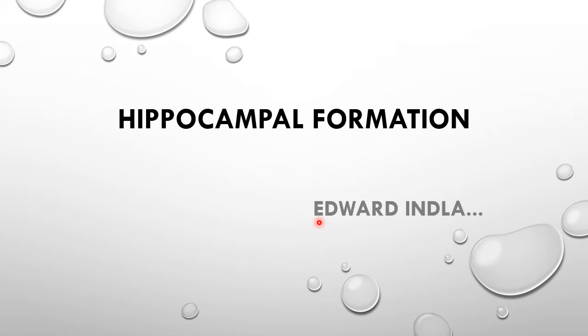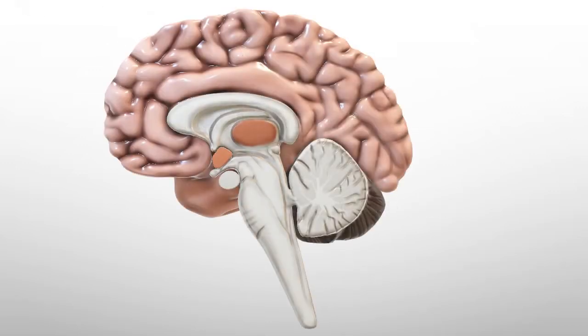Eventually the hippocampal formation becomes vestigial in the upper part, but in the lower part it grows prominently downward and forward within the temporal lobe, expressed in the form of the dentate gyrus of the hippocampus. We will study the hippocampus, fornix, and dentate gyrus in today's topic. Here we are seeing the medial surface of the cerebral hemisphere, along with the midbrain and pons, and we can identify the corpus callosum.